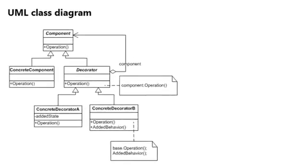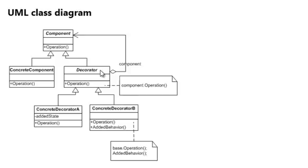If we look at the UML class diagram, let's say we have a component — a class which lies outside of our own application, coming from a third-party library. This component has an interface; the component is just the interface or an abstract. The concrete component also has this operation. We then create a decorator, and what a decorator does is it implements the exact same interface or inherits the exact same abstract class as the component it is trying to decorate.